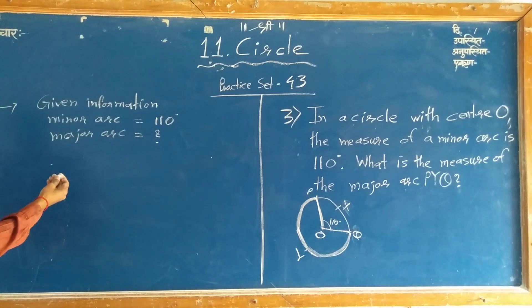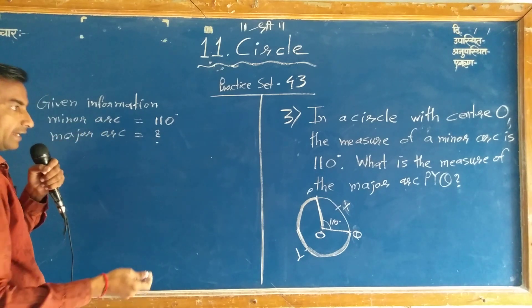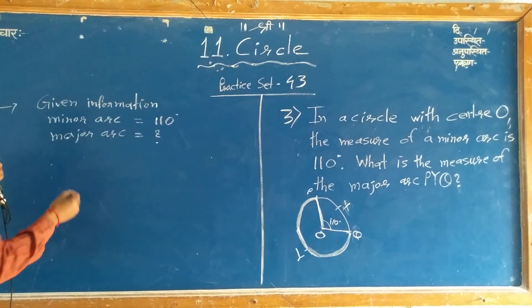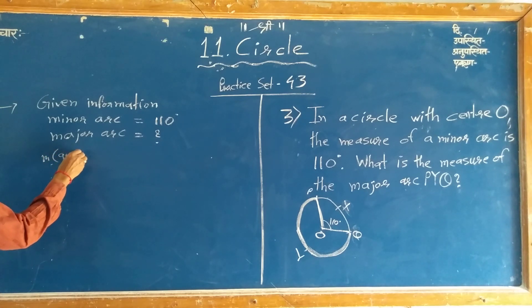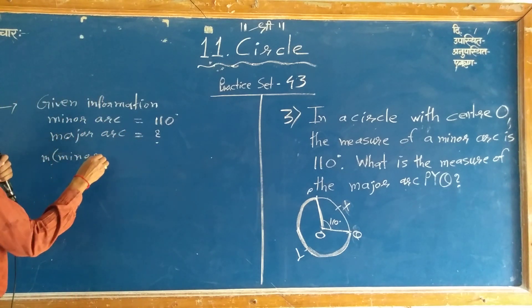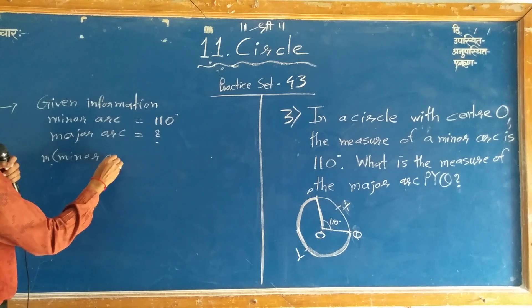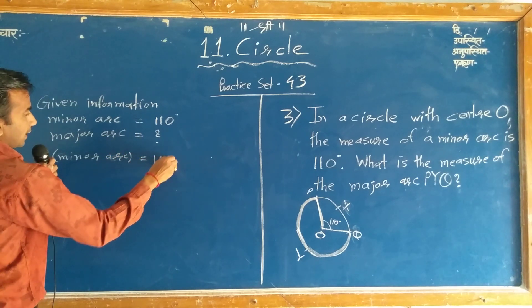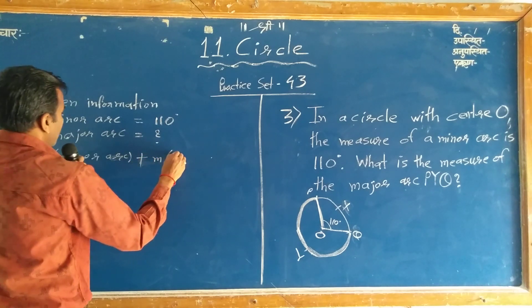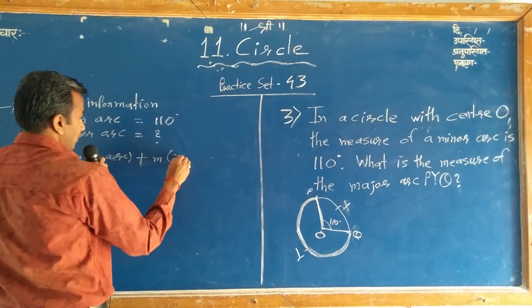The measure of arc is equal to 360 degrees. The measure of arc is equal to measure of minor arc plus measure of major arc.